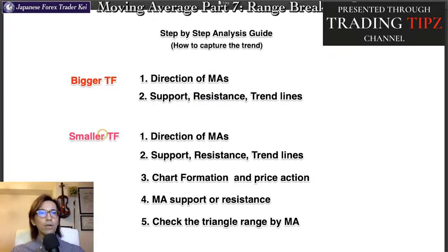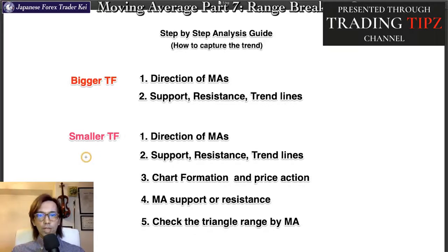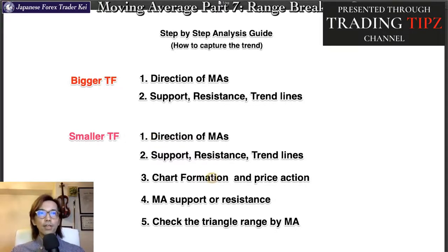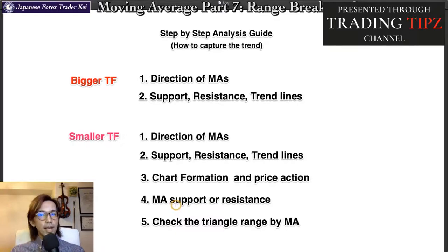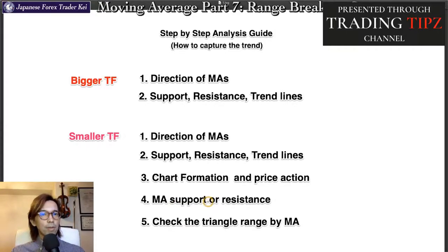Then you go down to the lower time frame chart and check the direction of the moving averages as well, and see if they are all pointing towards the same direction or not, and also draw lines for further confirmations of the trading edge on the market. You also look at the price action of the lower time frame chart, and check if the price has been resisted or supported by the moving average — that can be another confirmation of the persistent trend. Make sure to check if the price has been resisted or supported by the moving average range in the lower time frame chart.